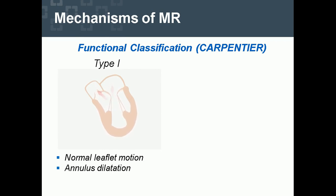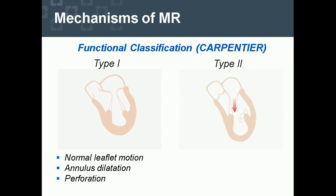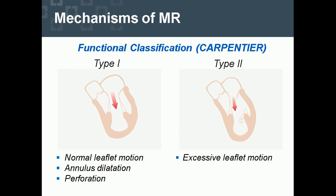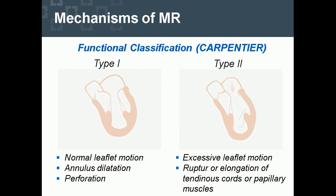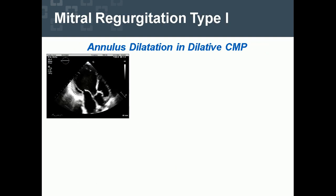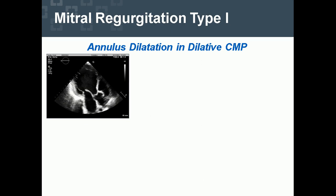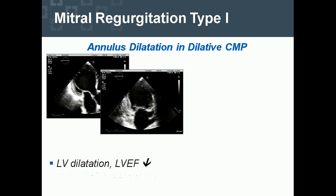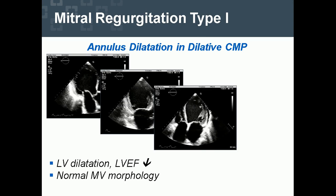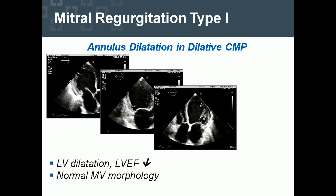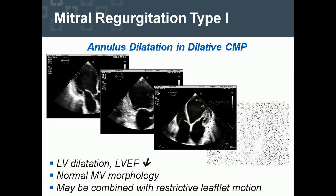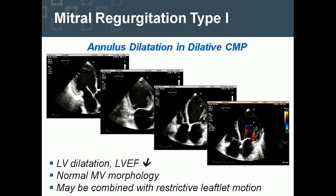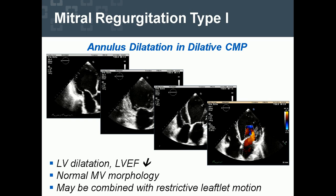Type 1 is not a disease of the valve — it is a disease of the ventricle. Perforation of the valve also belongs to type 1. Type 2 involves excessively flat motion due to rupture or elongation of the tendinous cord or papillary muscles. On echo, a dilated left ventricle and low ejection fraction are typical. Again, this is not a valve disease but a ventricular disease, with normal mitral valve morphology that may be combined with restricted leaflet motion or other types of MR.